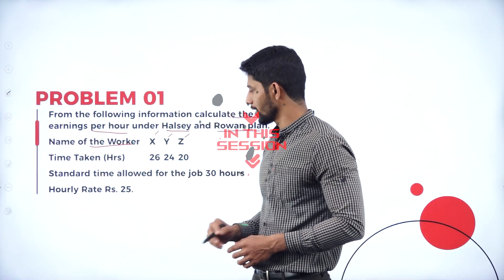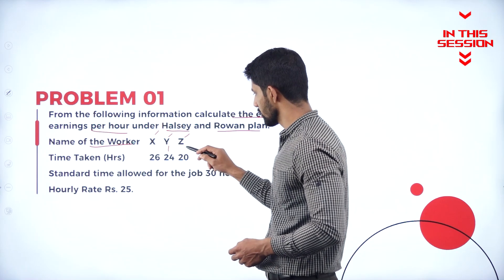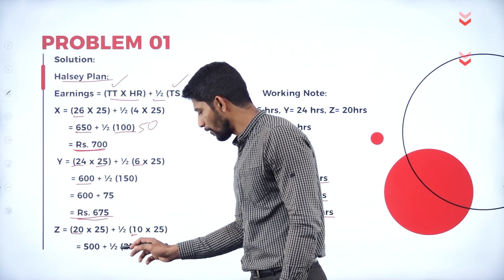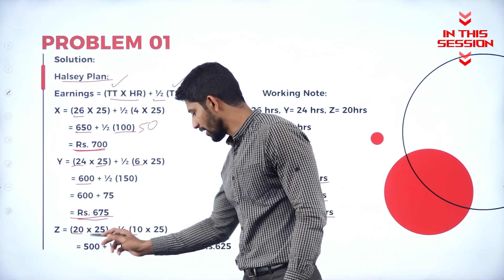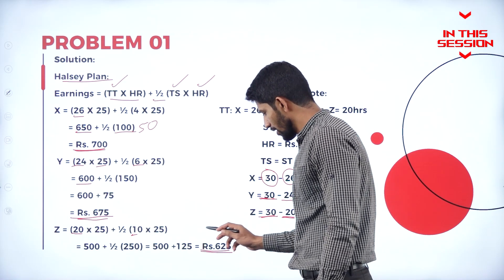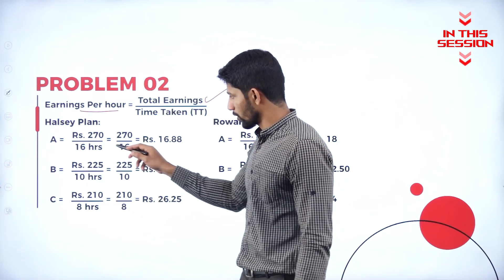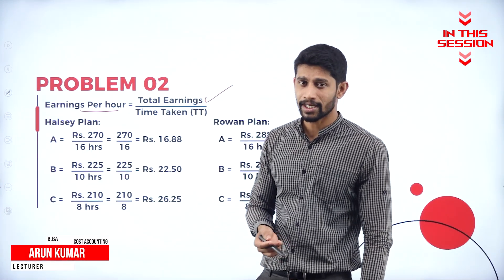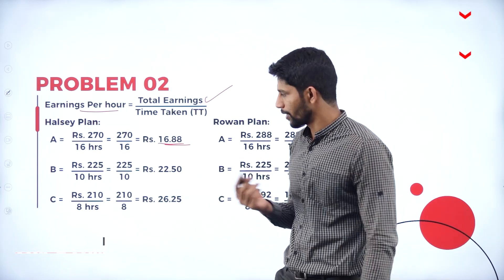What is the time taken by Mr. X? It is 26 hours, and by Mr. Y, 24 hours, and Mr. Z, 20 hours. 500 plus half of 250 is how much? 125. So 125 plus 500, you will get 625. So 625 is the earning of Mr. Z under Halsey plan. What is the total earning of Mr. A? 270 divided by time taken is 16 hours — 16 rupees 88 paisa per hour.